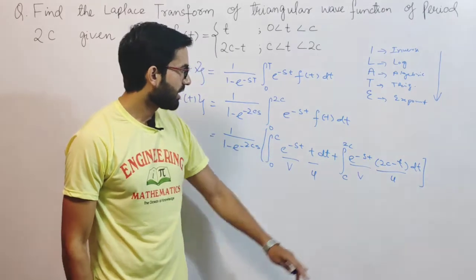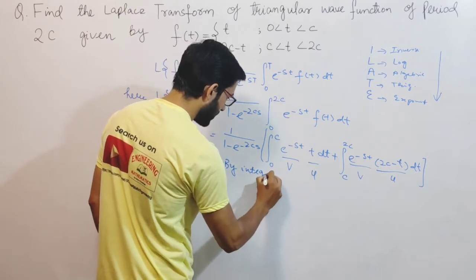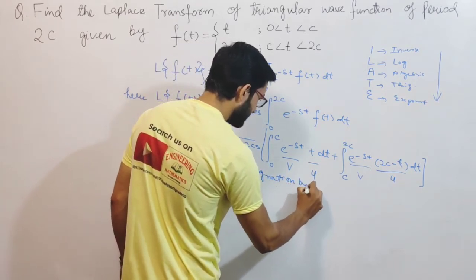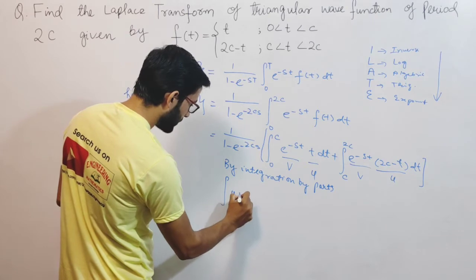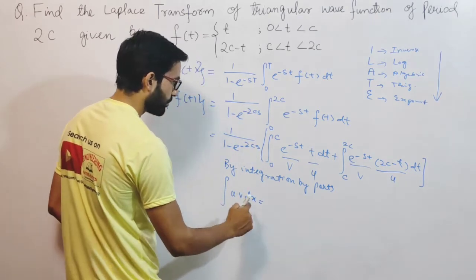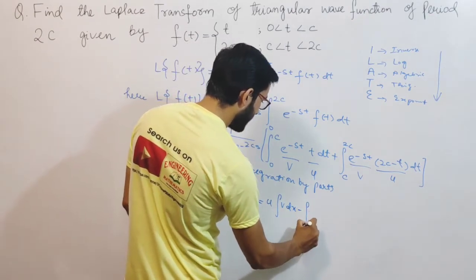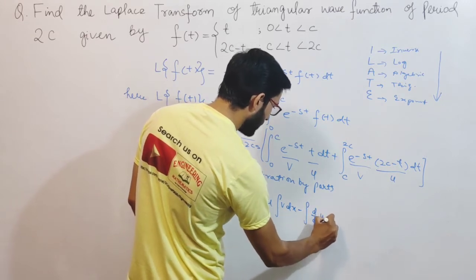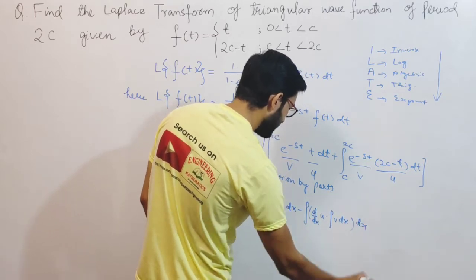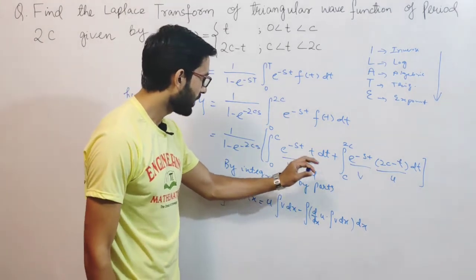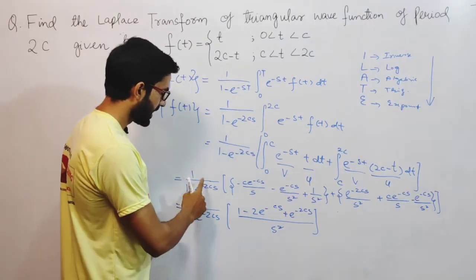Now applying the integration by parts formula: integral of u·v dx = u·(integral of v) minus integral of (derivative of u · integral of v) dx. I apply this formula to both integrals, then substitute the respective limits — 0 to c for the first and c to 2c for the second — to get my intermediate result.